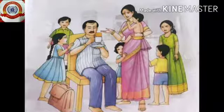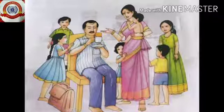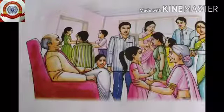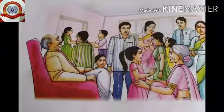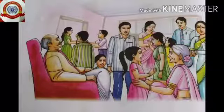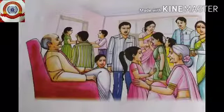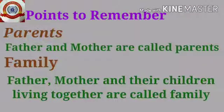Look at this picture — how many members are there? Father, mother, their children, uncle, and cousins. Depending upon the members in a family, families are divided into: small family, big family, and joint family.